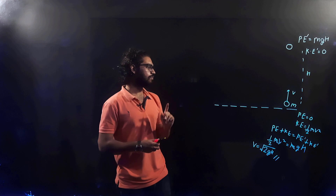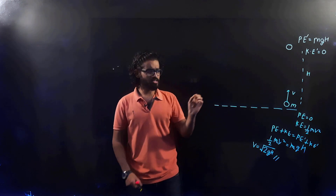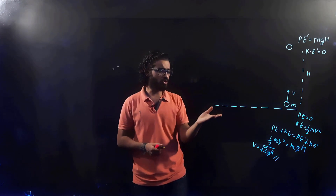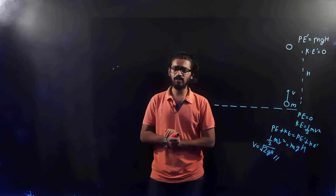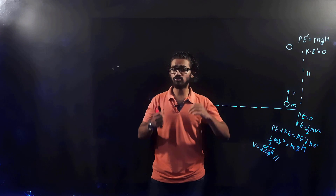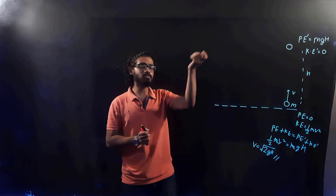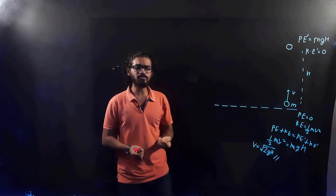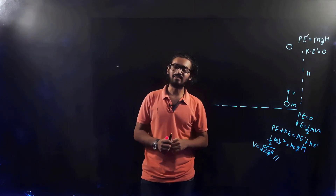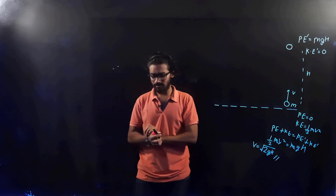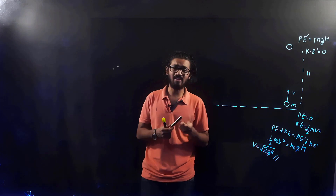We can observe that the velocity of the particle decreases as its potential energy increases. But what happens if instead of a particle we introduce a photon? From Einstein's theory of relativity, the velocity of a photon — the speed of light — always remains constant. So as the photon rises and its potential energy increases, that energy must come from somewhere. Since velocity cannot decrease, the frequency of the photon reduces, and that reduction in frequency accounts for the increase in gravitational potential energy.